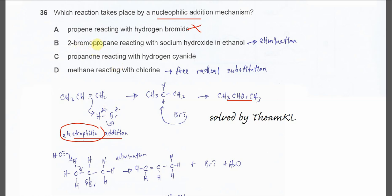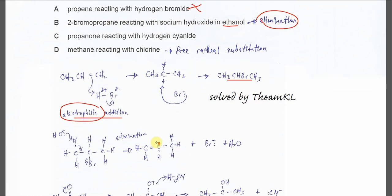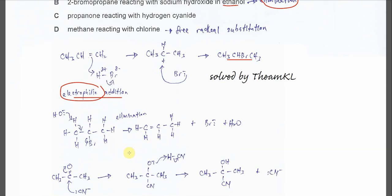So for B, 2-bromopropane reacts with sodium hydroxide in ethanol. When we use sodium hydroxide in ethanol reacts with the haloalkane, we know that it must be elimination. How it works? I show you this mechanism.